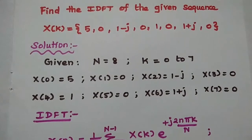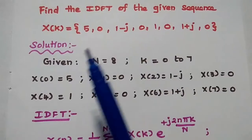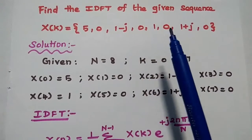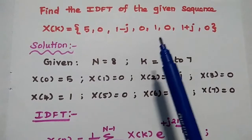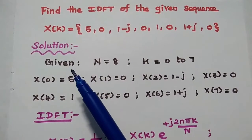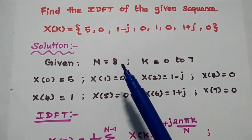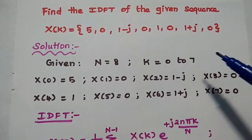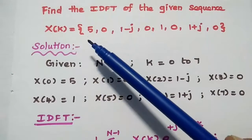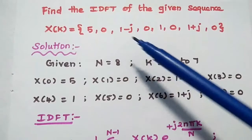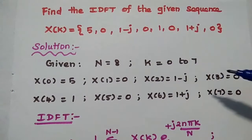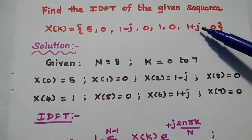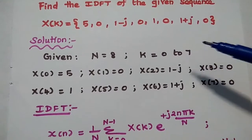The next problem is to find the IDFT of the given sequence X(k) = {5, 0, 1−j, 0, 1, 0, 1+j, 0}. There are 8 sample values, so N = 8 and k varies from 0 to 7. So X(0)=5, X(1)=0, X(2)=1−j, X(3)=0, X(4)=1, X(5)=0, X(6)=1+j, X(7)=0.